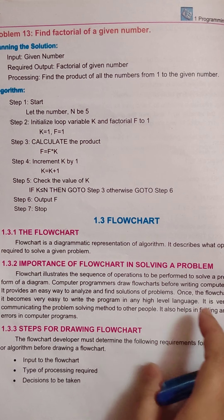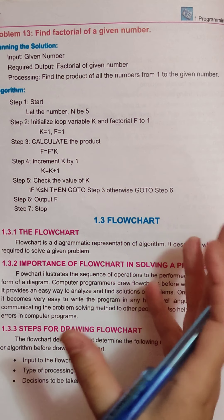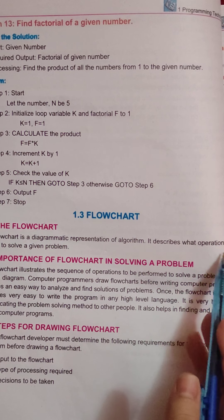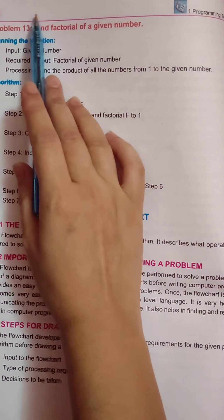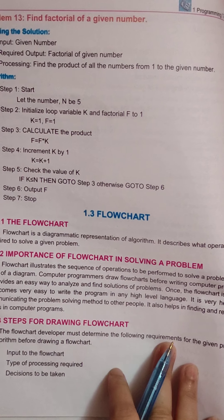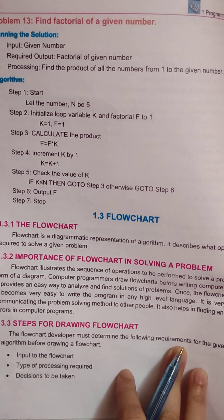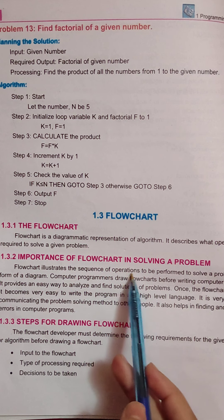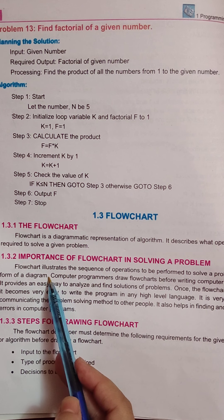We have some programs that are very complex which we cannot understand theoretically, so we use flowcharts. A flowchart describes what operations are required to solve a given problem. For example, finding the factorial of a given number — we describe and represent the operations required. The importance of a flowchart is that it illustrates the sequence of operations to be performed to solve a problem in the form of a diagram.